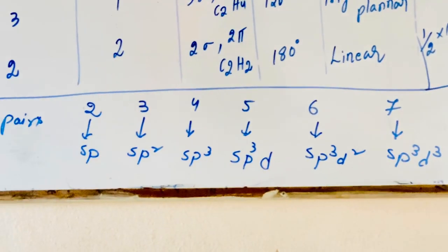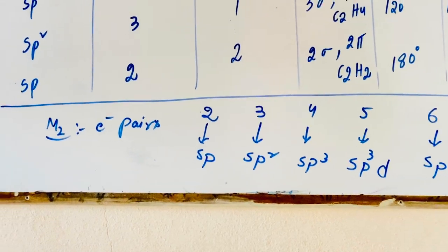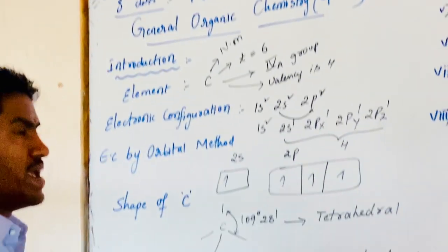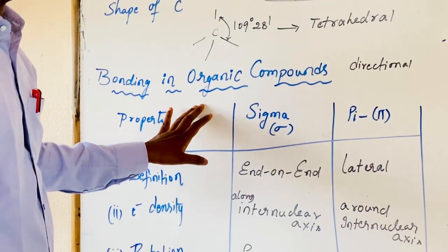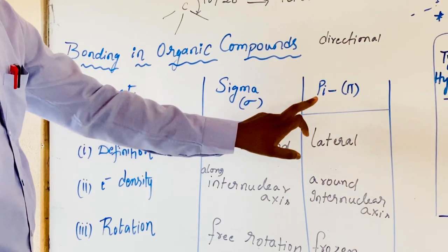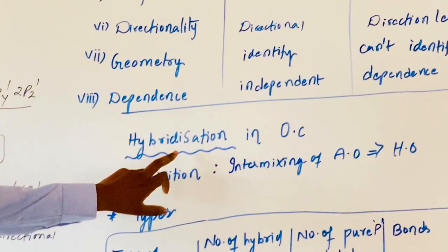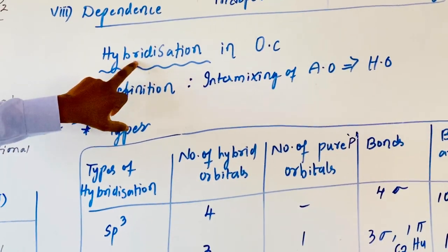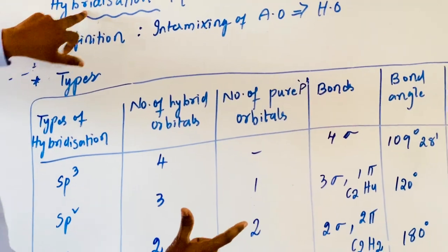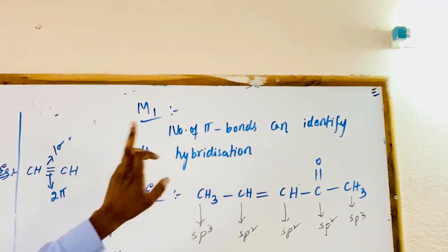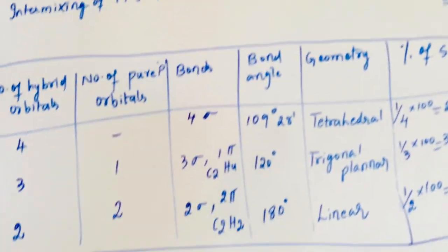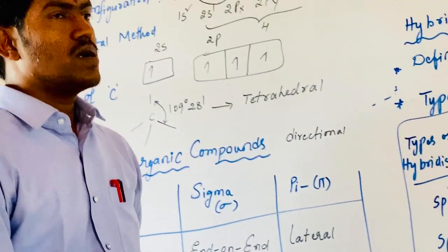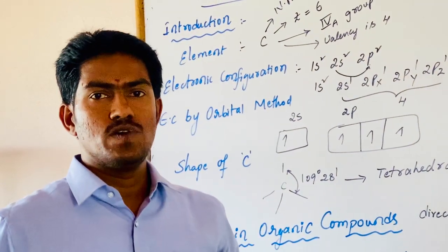In this session we discussed the introduction of organic chemistry, bonding in organic compounds with the differences between sigma and pi bonds, and hybridization in organic compounds — identification of hybridization by two methods: Method 1 based on number of pi bonds, and Method 2 based on electron planes. We will continue in the next class. Thanks for watching.